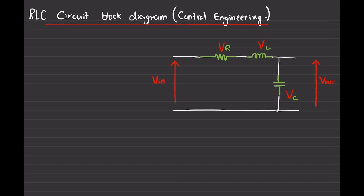To draw the block diagram we have to first determine the direction of current and the voltages in this diagram. The voltage is being given in this direction, which means the current will flow from here and go down, and we'll name it as I. Since the current is flowing in the downward direction, the voltages are going to flow across these components in the opposite direction. The voltage across the resistor is represented by VR, the voltage across the inductor by VL, and the voltage across the capacitor by VC.